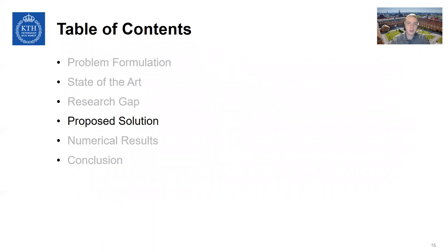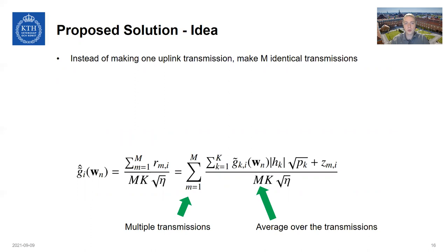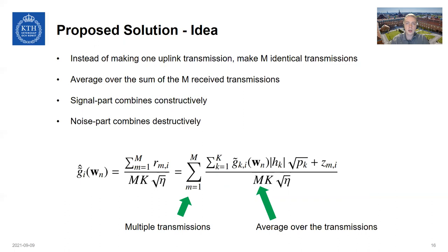And that is what we are proposing here. And if you remember the original title, it's probably quite obvious that what we are proposing has to do with retransmissions. So in this uplink aggregation step of federated learning, when we're sending the model update to the server, we propose that instead of making one uplink transmission, you could just make M identical transmissions. And then upon receiving all of these M transmissions, the server can average over the sum of all of these transmissions. And of course, this should bring some improvement to the SNR, because the signal part is going to be the same in the transmission and combined constructively, while the noise part is going to change and therefore sometimes combine destructively.